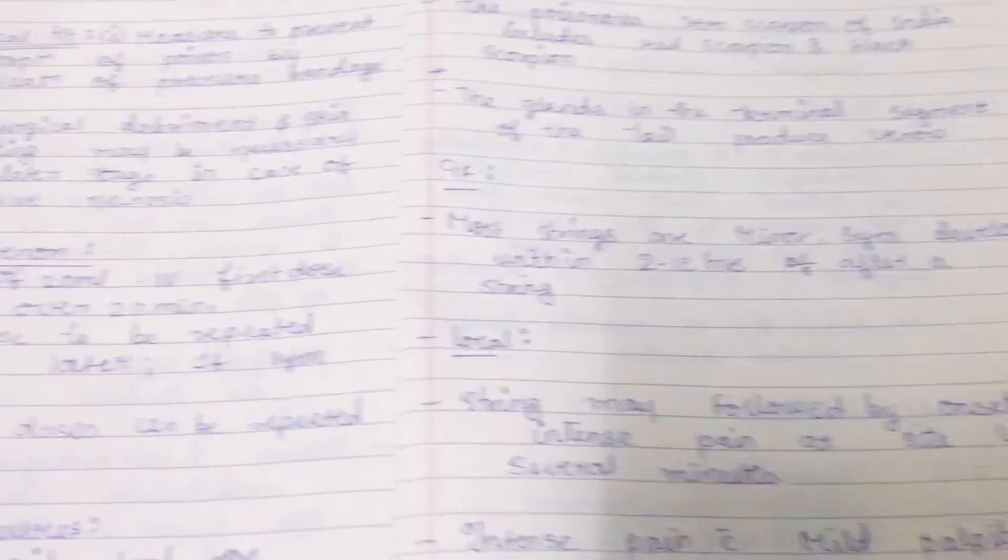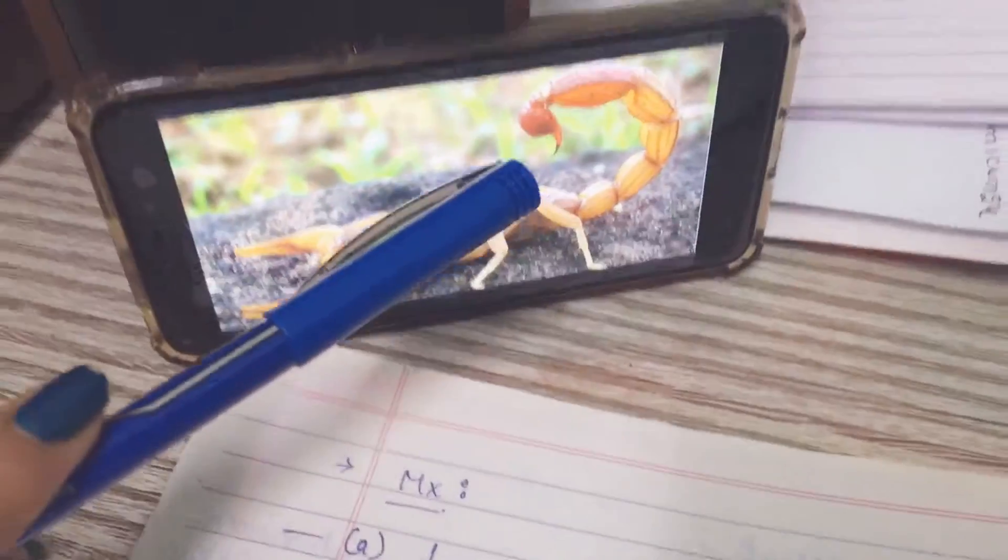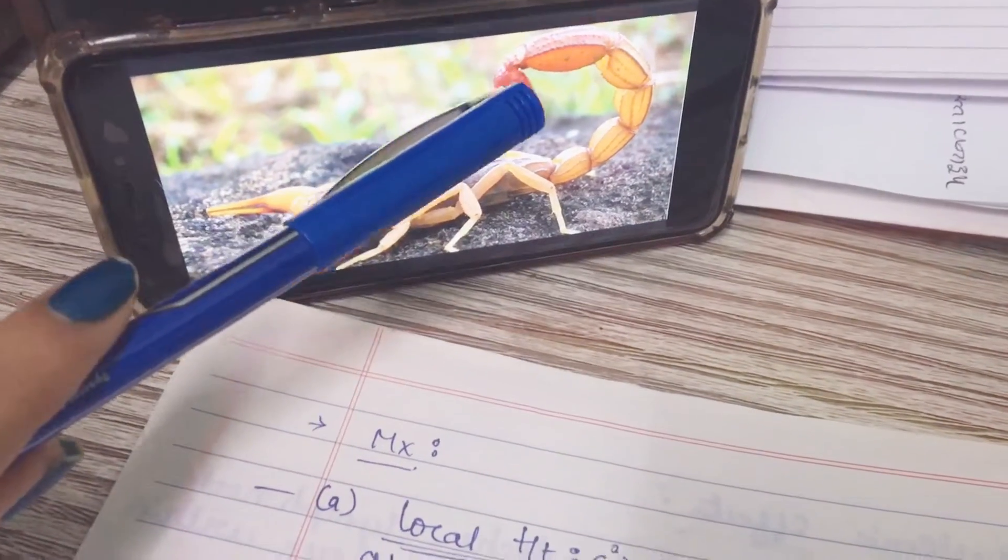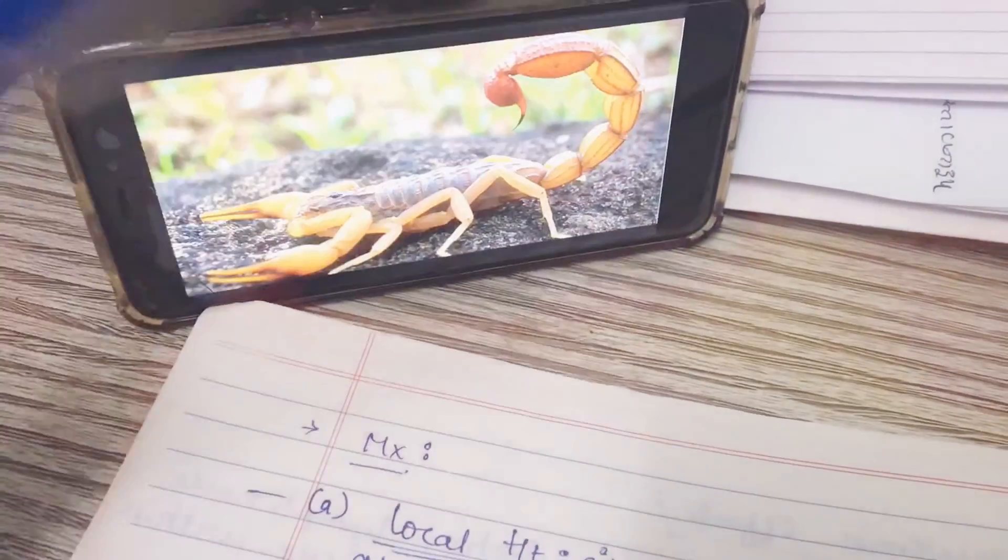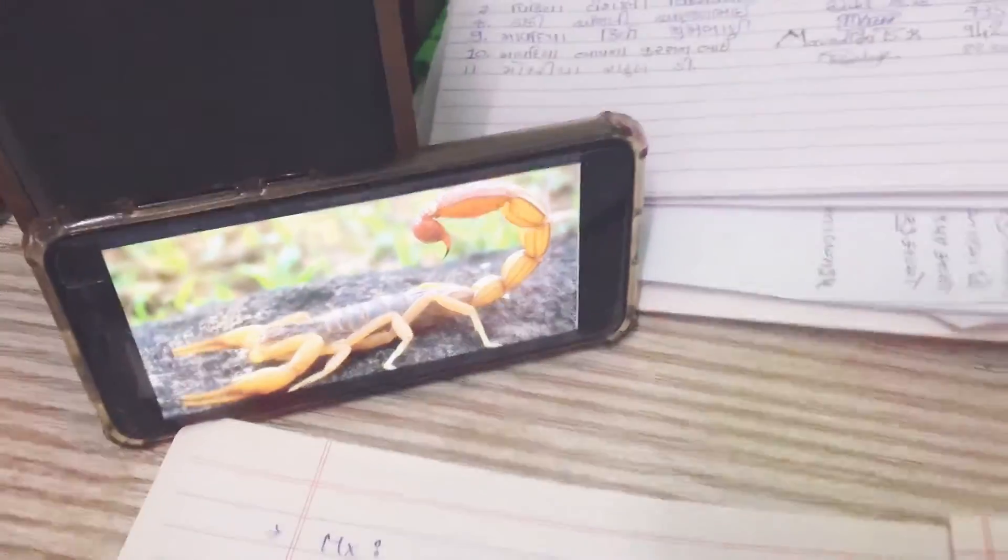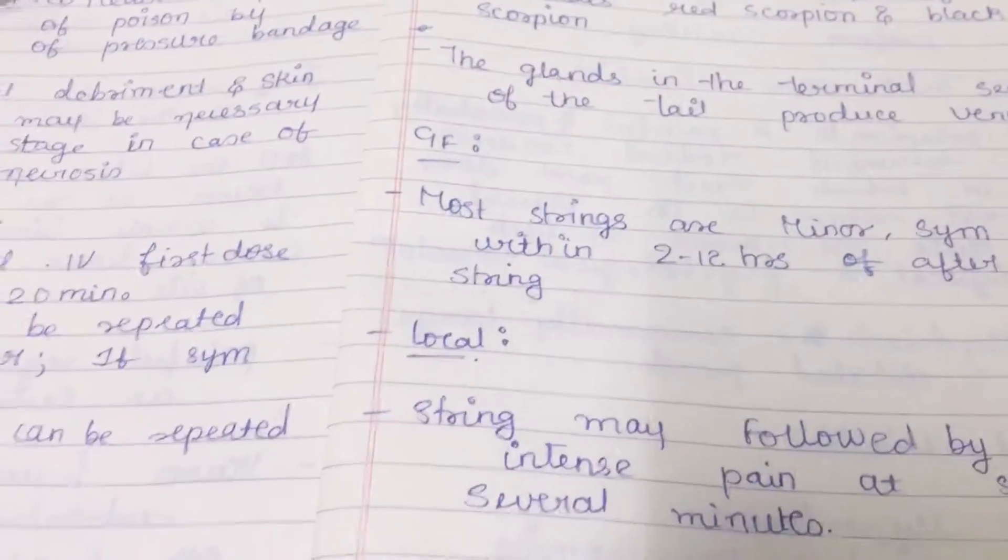See this, there is an end part of the tail which is a terminal part and it contains a gland and it will store the venom. It is also minute in size.